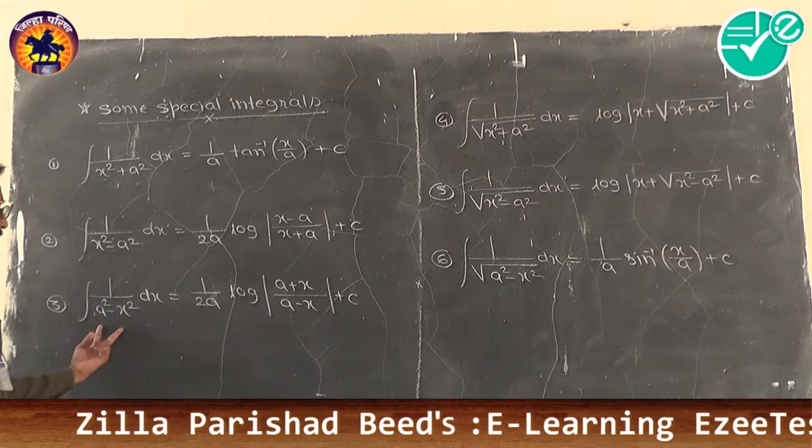Now we will make practice on these special integrals. The very first problem to evaluate: integration of 1/(x² + 9) dx. Let this be I. We rewrite x² + 9 as x² + 3².